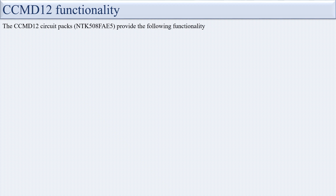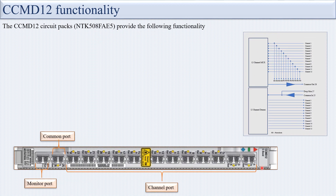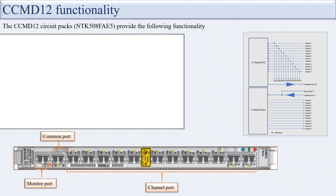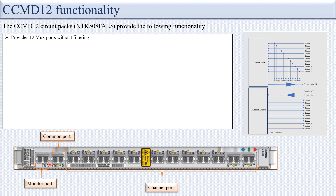The CCMD 12 circuit pack, with pack code NTK 508 FA E5, provides the following functionality: 12 MUX ports without filtering and 12 DMUX ports without filtering. Port numbers 1 to 24 are the channel ports, ports 25 and 26 are the common ports, and port 27 is the monitor port.